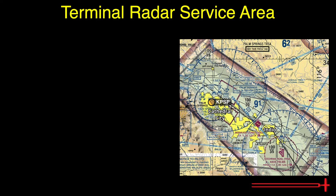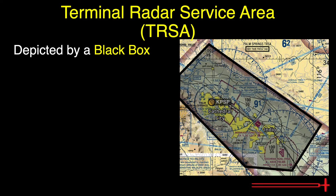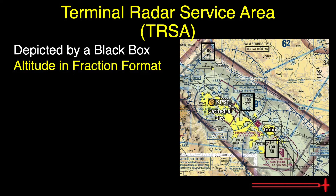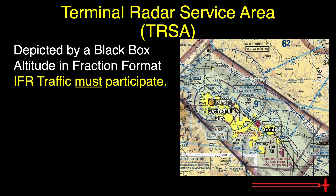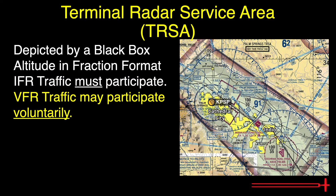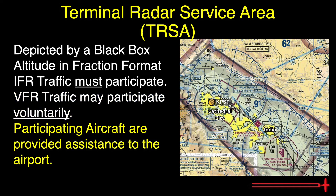Next up is Terminal Radar Service Area. A Terminal Radar Service Area, or TIRSA, can be seen on VFR charts as a large black box surrounding delta airspace. The altitude limits are listed in fraction format. All IFR traffic must participate in TIRSA operations and procedures. VFR traffic may participate voluntarily. It is recommended that all pilots accept terminal radar approach services while in the TIRSA. Pilots who do not want to participate should simply state that by saying something along the lines of 'negative radar service.' Participating aircraft will be provided separation and assistance in approaching the airport.